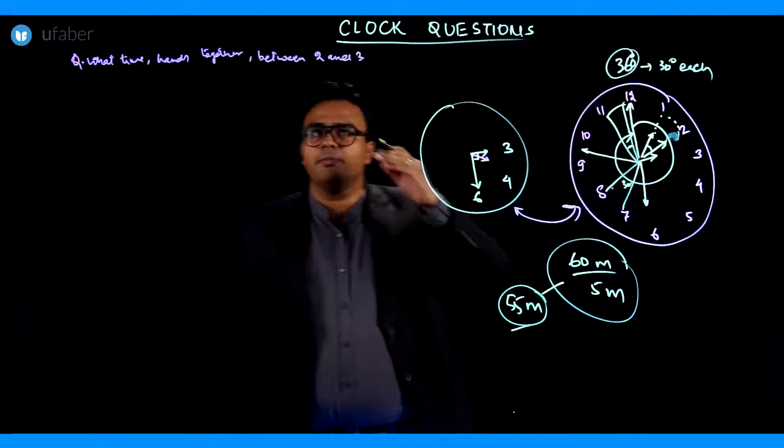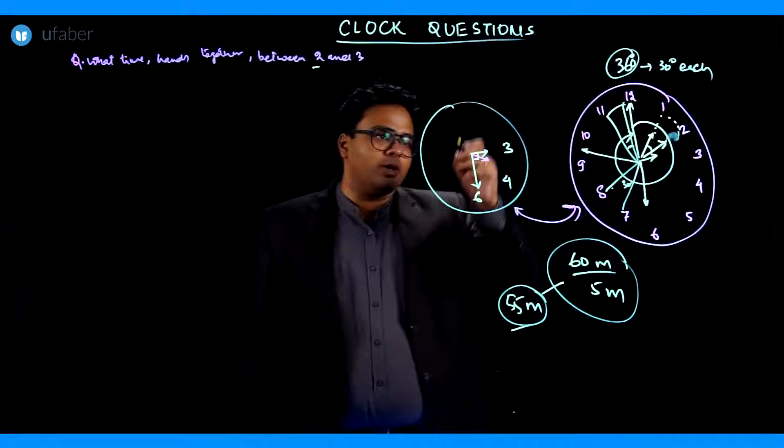So let us quickly start. The minimum time is 2 o'clock, maximum is 3 o'clock. Between the window of 2 and 3, they have to be together.